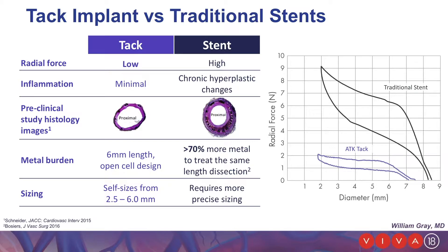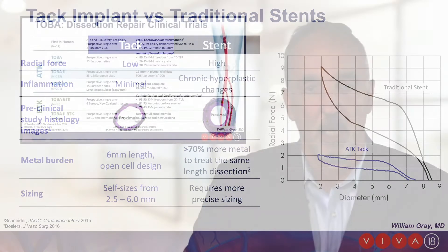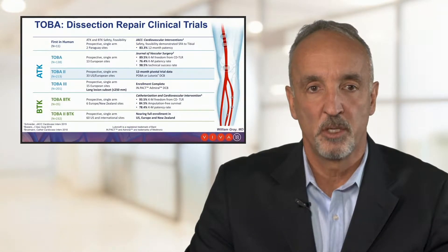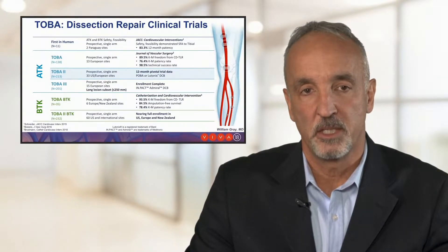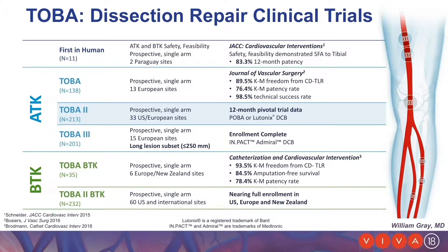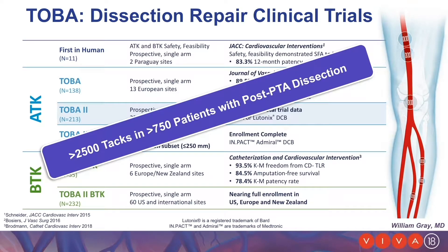Sizing is also much easier. A single device will treat a vessel size from 2.5 to 6 millimeters, as compared to a stent which requires a much more precise sizing matrix. Before we get into the TOBA II trial, it's important to recognize where the TOBA II pivotal trial fits in the larger cadre of trials being done with this device. The TOBA II trial is the pivotal trial for the above-the-knee application, and the TOBA II BTK pivotal trial has nearly completed its enrollment. In total, over 2,500 TACs in 750 patients with post-PTA dissection have been implanted in the clinical regulatory research environment.